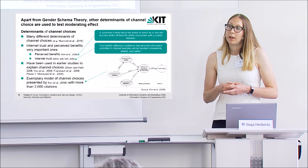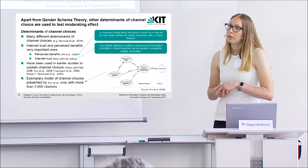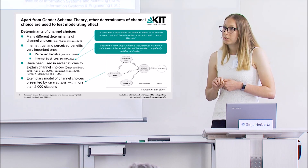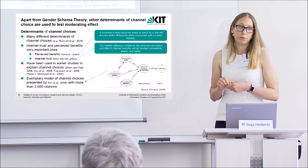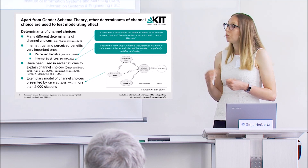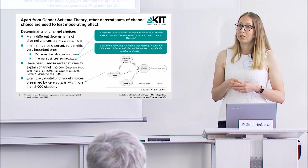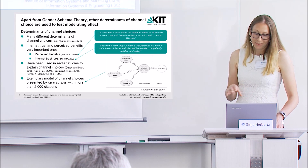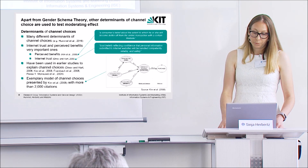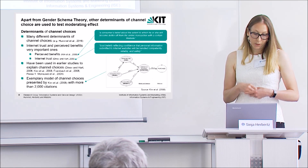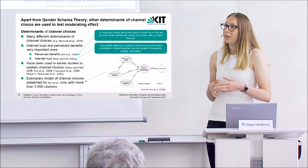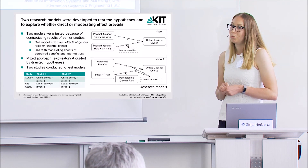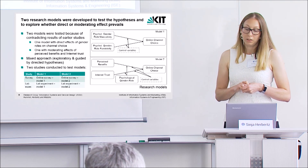Apart from gender schema theory, we have used other determinants that are used to explain the channel choices. And we've decided to use two very important determinants, which were internet trust and perceived benefits. These two constructs have always been used in earlier studies to explain the channel choices and are very established. And as we cannot rely here on a research model in this context, we chose the model of channel choices from Kim as an example for our models. Finally, there you can see on the right side our two models for the moderating effect and the direct effect.